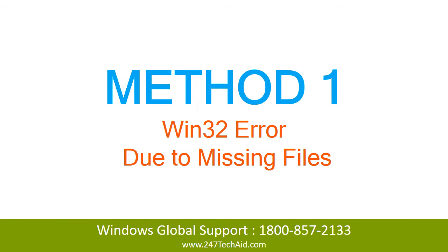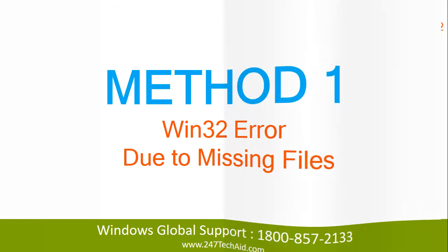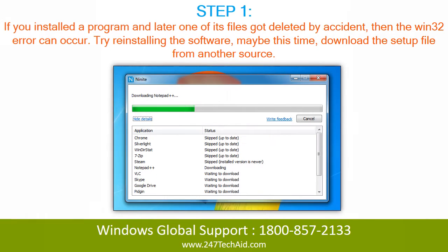Method 1: Win32 error due to missing files. Step 1: If you installed the program and later one of its files got deleted by accident, then the Win32 error can occur. Try reinstalling the software — this time, download the setup file from another source.